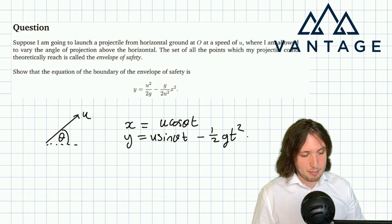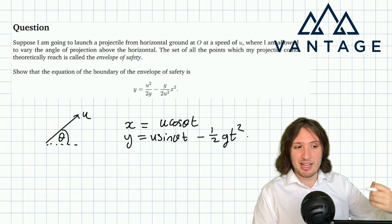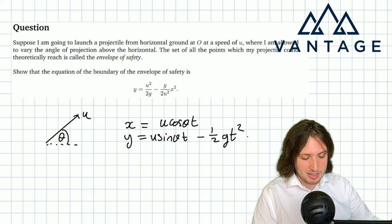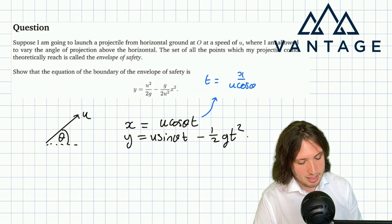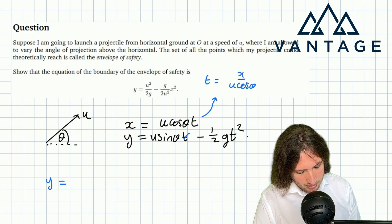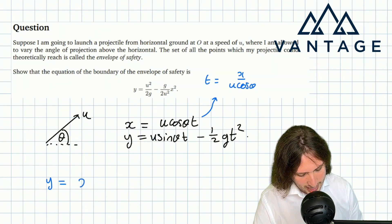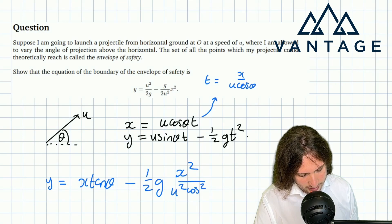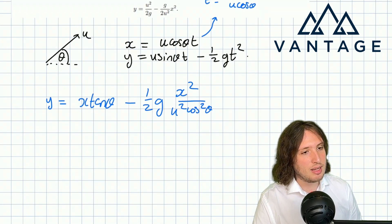It makes a lot of sense to eliminate t and obtain a quadratic in x—a Cartesian equation of motion rather than a parametric equation. The first equation tells me that t is x over u cos θ, and I can plug that into the y equation to see that y equals—the u's cancel and the sine over cos becomes a tan—so that first term is x tan θ, and then I get minus half g x squared over u squared cos squared θ.